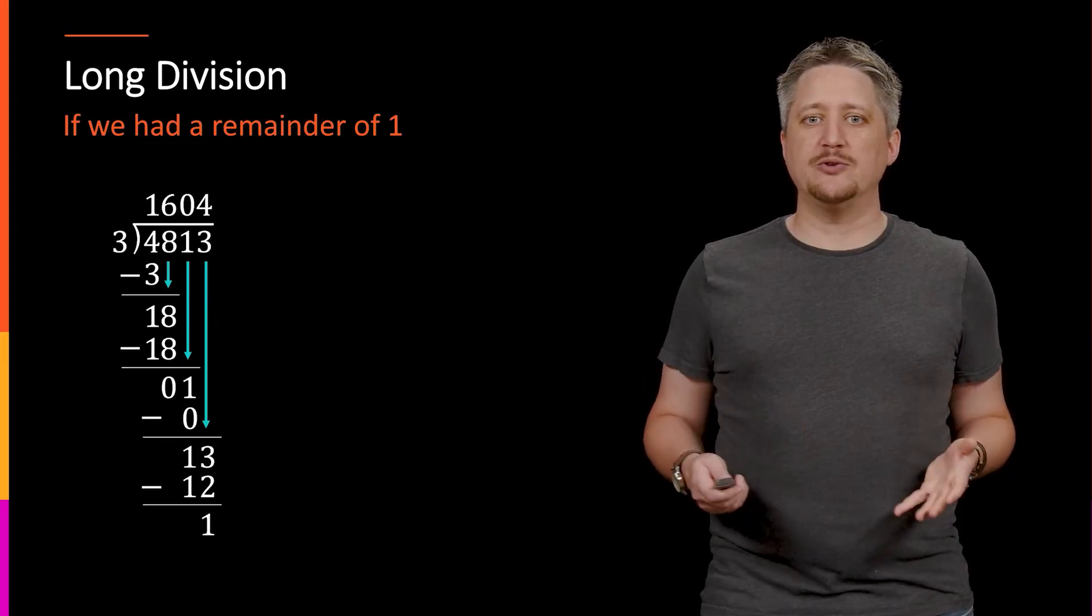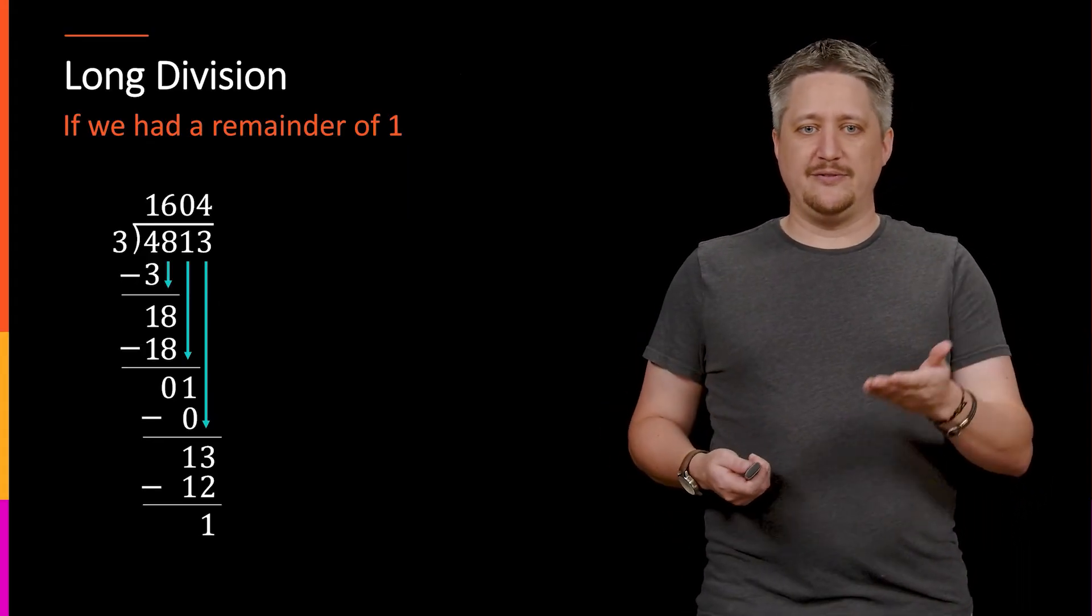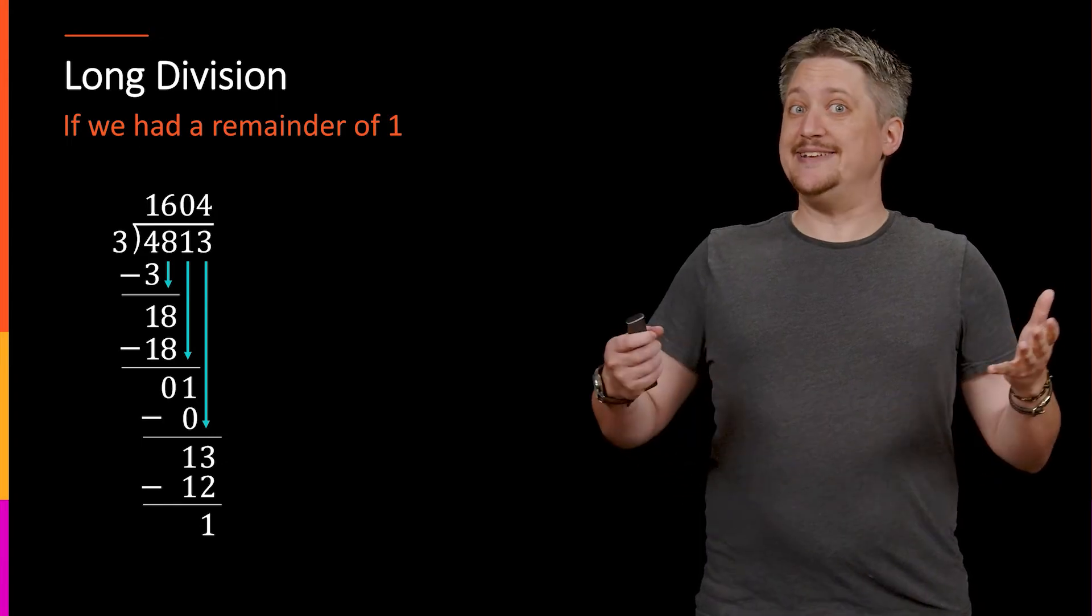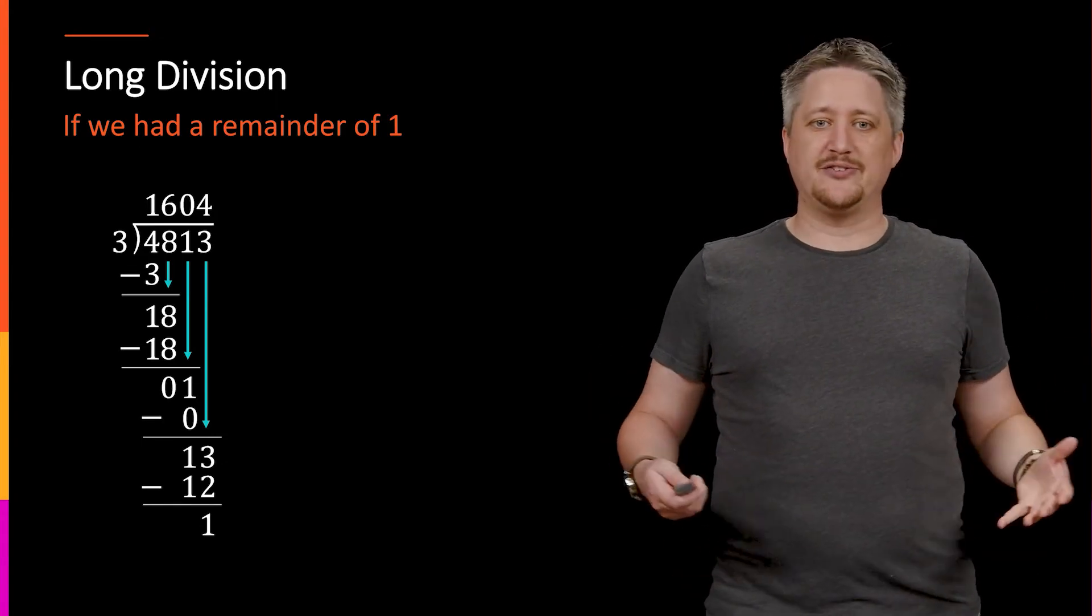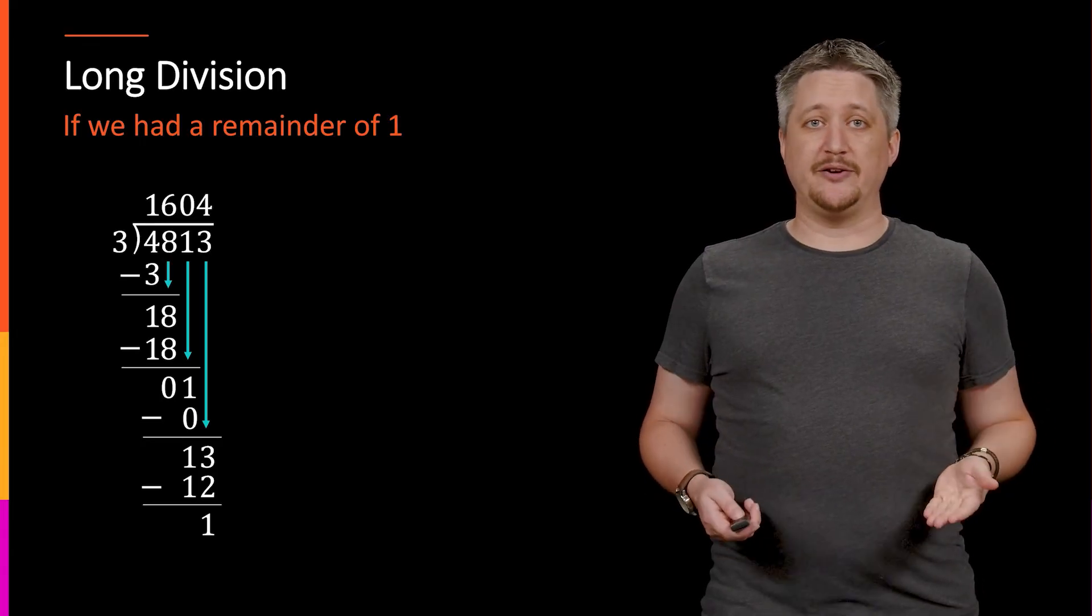The other thing is how do we deal with remainders? So with numbers, if we had, for example, 4813 instead of 12, and we did this whole process, we get 1604 and we have a remainder of one.